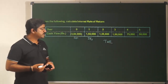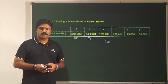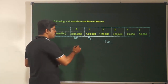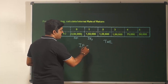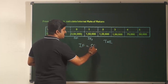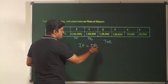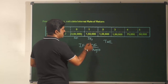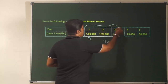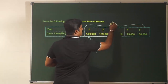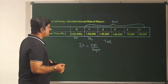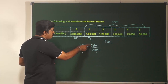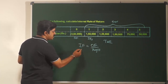In the trial and error method, you have to make an arbitrary assumption of rates. For guidance, we will find out what is known as the investment factor. In investment factor, we take the total outflows towards the project and divide it by the average cash flow. Take all 5 years, sum them, and divide by 5 to get the average cash flow. If you divide the outflow of 384,000 by that average cash flow, you get the investment factor.